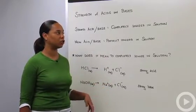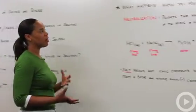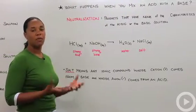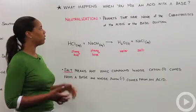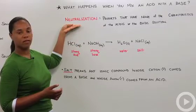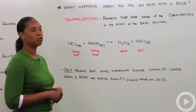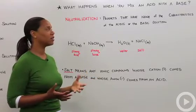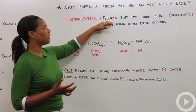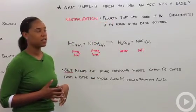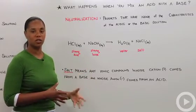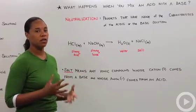So if we have a strong acid and a strong base, what happens if we mix them together? You'll get this idea of something called neutralization. Basically, they cancel each other out, meaning that the products have none of the characteristics of either the acidic solution or the basic solution.